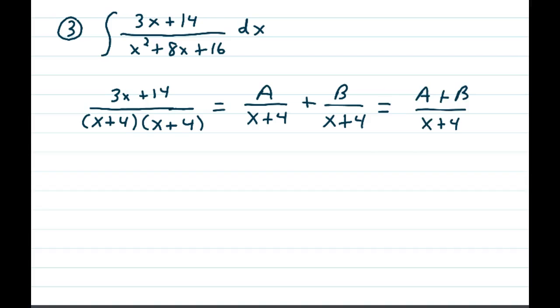The problem is, thinking of this as two fractions being added together, A over x plus 4 plus B over x plus 4 already has a common denominator. A and B are numbers, so if I were doing this in a forward fashion, I would end up getting A plus B being added together over only one x plus 4.